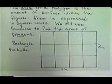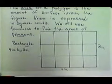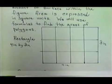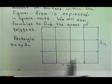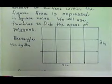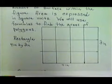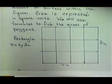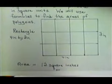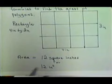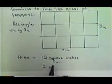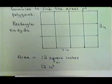To find the area, what I want to do is count and see how many little squares I have in my figure. If I count 1, 2, 3, 4, 5, 6, 7, 8, 9, 10, 11, 12. I have 12 little squares or 12 little square inches because each one of those little squares is 1 inch by 1 inch. So the area of that polygon is 12 square inches. Or you also sometimes see it written 12 inches with a little 2, which is an exponent raised there. That's also read 12 square inches or 12 inches square.